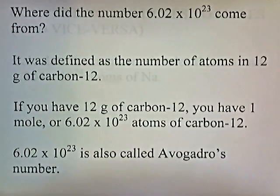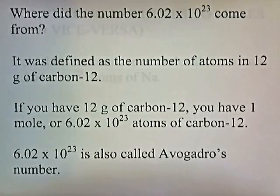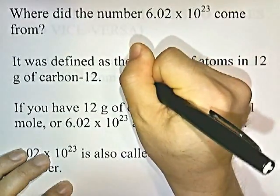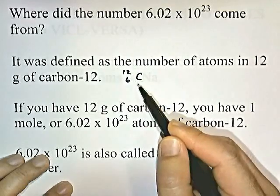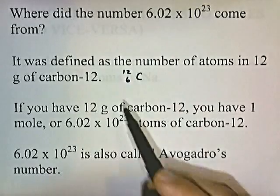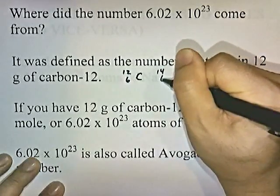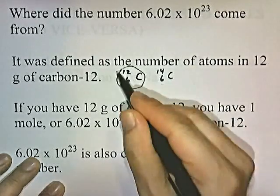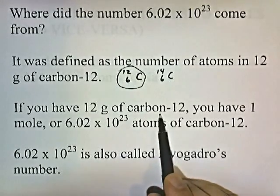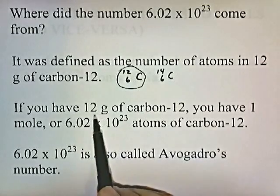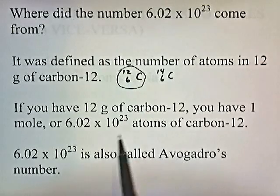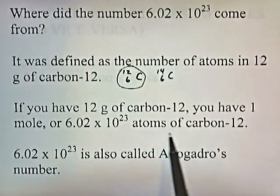Where did this number 6.02 times ten to the twenty-third come from? It was defined as the number of atoms in 12 grams of carbon-12. Carbon-12 is an isotope of carbon — one that has six protons and six neutrons. Another isotope of carbon is carbon-14, which has six protons and eight neutrons. If you have 12 grams of carbon-12, you have one mole, or 6.02 times ten to the 23rd atoms of carbon-12. This number is also called Avogadro's number.